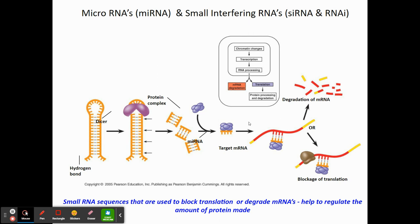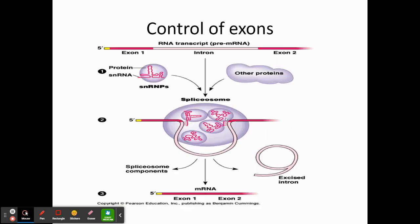Other types of factors are micro RNAs and small interfering RNAs — small RNA sequences that can block translation or degrade messenger RNAs. These can be turned on or turned off, and they occur after RNA processing. That's another form of eukaryotic gene control.